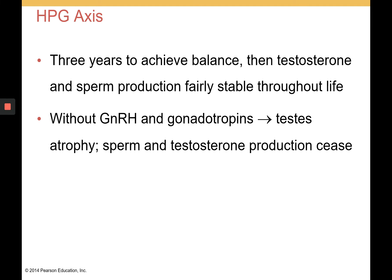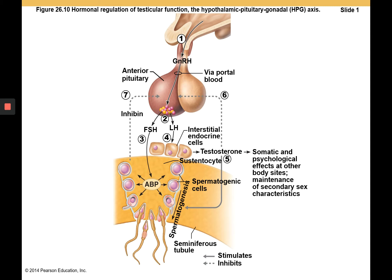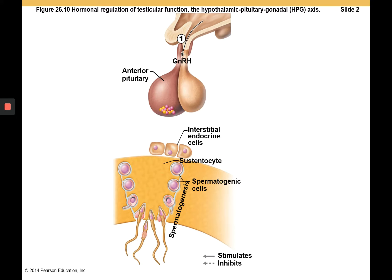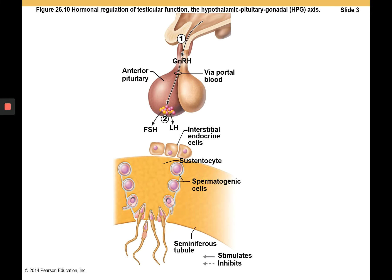Now let's take a closer look at the hormonal regulation of testicular function — again, the hypothalamic-pituitary-gonadal or HPG axis. The hypothalamus is in the brain, below the thalamus, connected to the pituitary gland via the infundibulum. The vascular connection through the infundibulum links the hypothalamus to the anterior pituitary. Gonadotropin-releasing hormone from the hypothalamus causes release of FSH and LH from the anterior pituitary, which then travel via the blood to the testes. FSH and LH are gonadotropins — tropic hormones that travel and cause the release of more hormones.